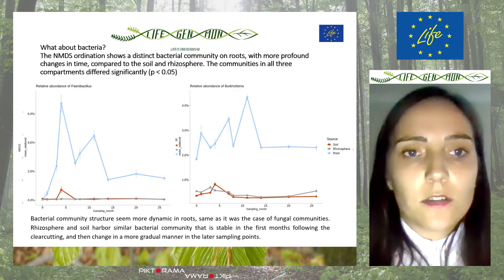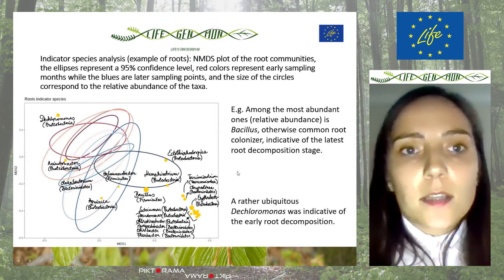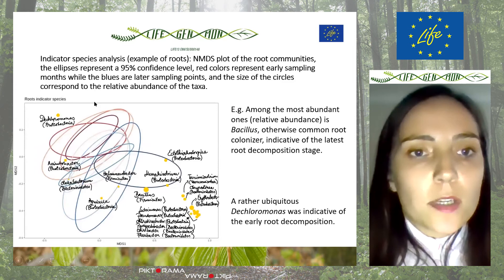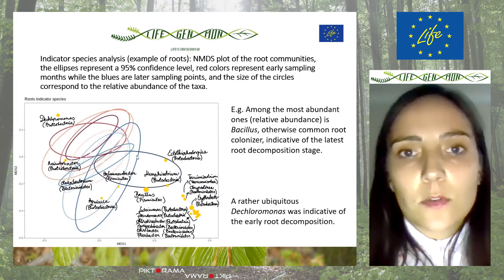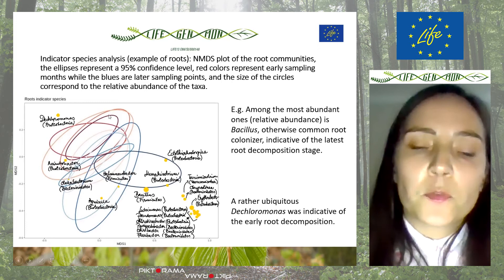Now looking at the indicator species analysis, here on the example of roots: we are looking at an NMDS graph where the ellipses represent 95% confidence intervals, and the red colors represent early stages of root decomposition — the early months of sampling.